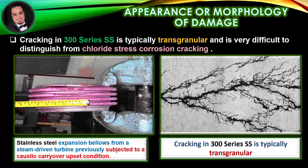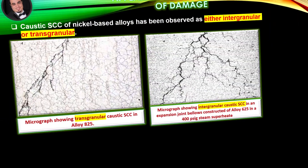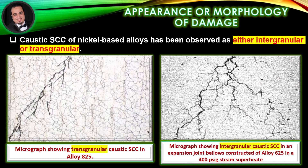Cracking can also be transverse to the weld. Caustic stress corrosion cracking in 300 series stainless steel is typically transgranular and is very difficult to distinguish from chloride stress corrosion cracking. Cracking of nickel-based alloys has been observed as either intergranular or transgranular.